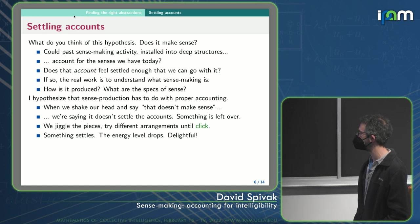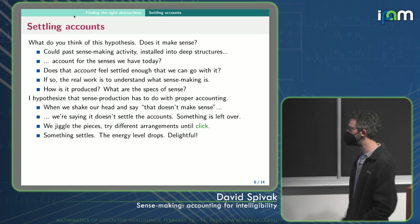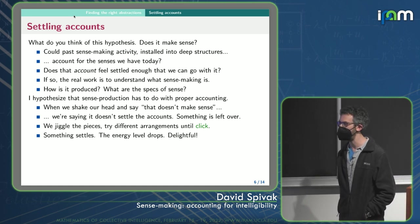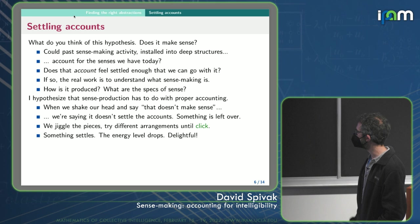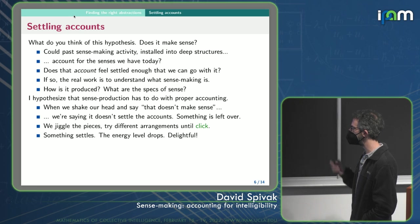So when we shake our head and we say, that doesn't make sense, we're saying that it doesn't settle all the accounts. There's something left over. Like, no, that doesn't make sense, because why would Bob have said that thing to Mary if, there's something left over. So we jiggle the pieces, we try different arrangements, and then something clicks, something settles into place.